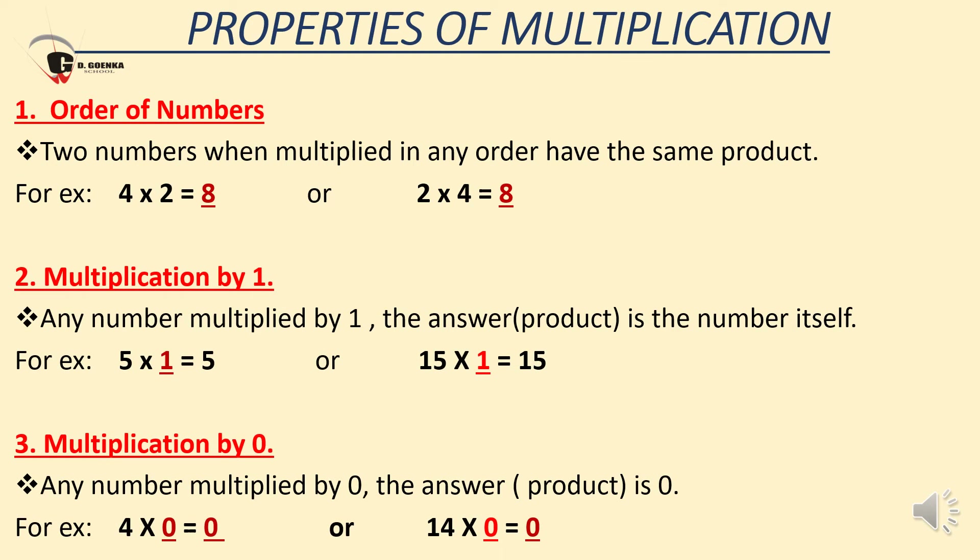Now let's move forward, dear students. Next is properties of multiplication, which is a very important topic. There are 3 main properties of multiplication: first is order of numbers, second is multiplication by 1, and third is multiplication by 0. Order of numbers: two numbers when multiplied in any order have the same product. For example, 4 multiplied by 2 equals 8, and 2 multiplied by 4 is also equal to 8.